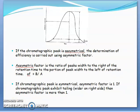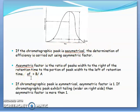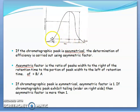For an asymmetric peak, the efficiency is determined using the asymmetric factor AF. The asymmetric factor AF equals B/A, which is the ratio of peak width to the right of the retention time (B) to the peak width to the left of the retention time (A). If the peak is symmetrical, the asymmetric factor is 1. But if the peak exhibits tailing or fronting, the asymmetric factor may vary from 1.